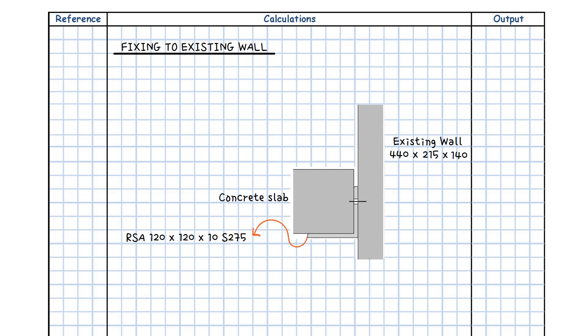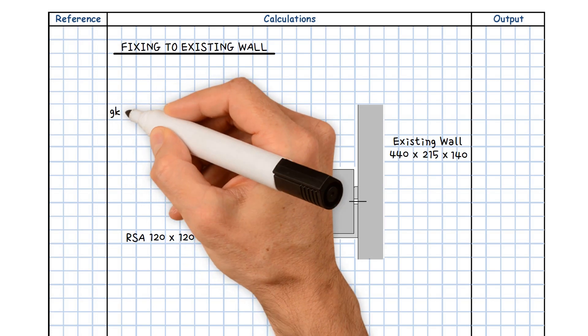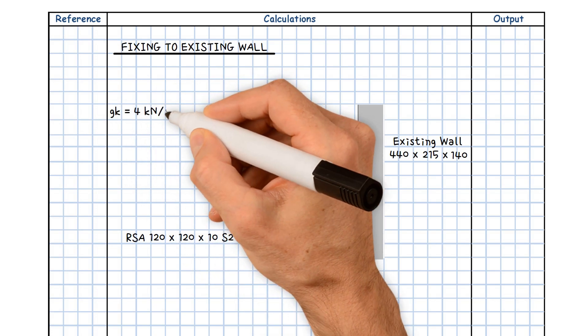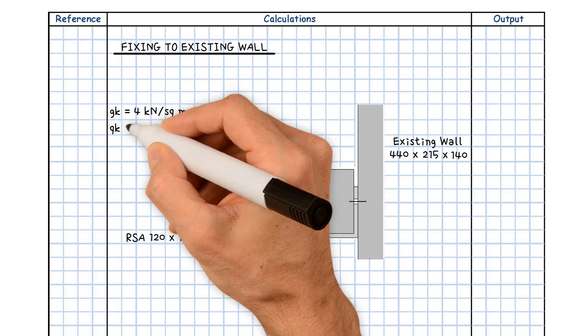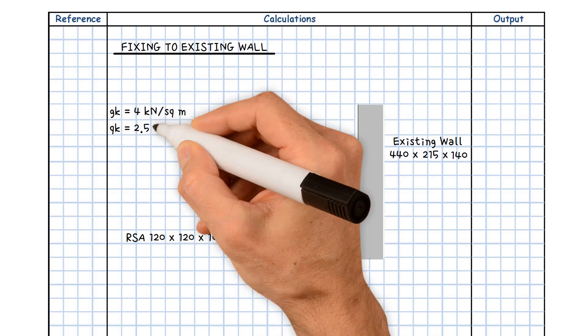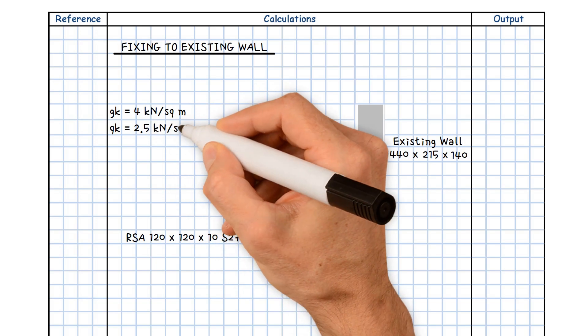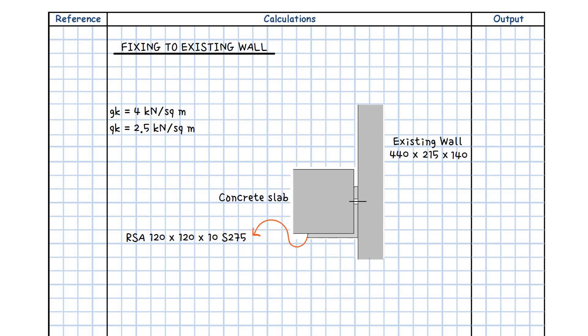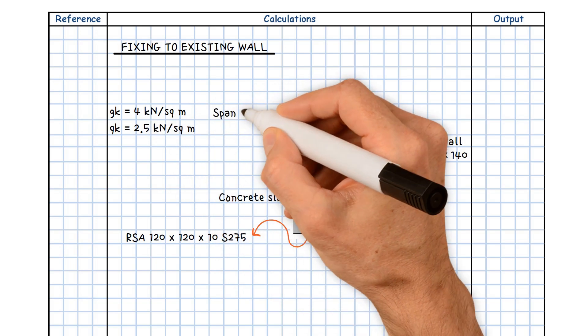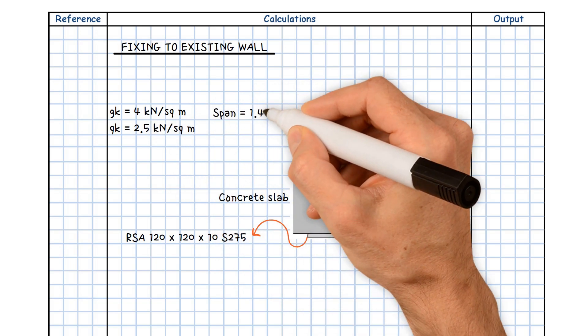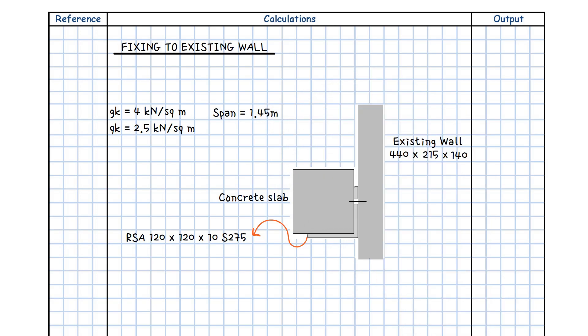Let's assume we have a dead slab load of 4 kN/m² and an imposed load of 2.5 kN/m². The span of the slab is 1.45 m.